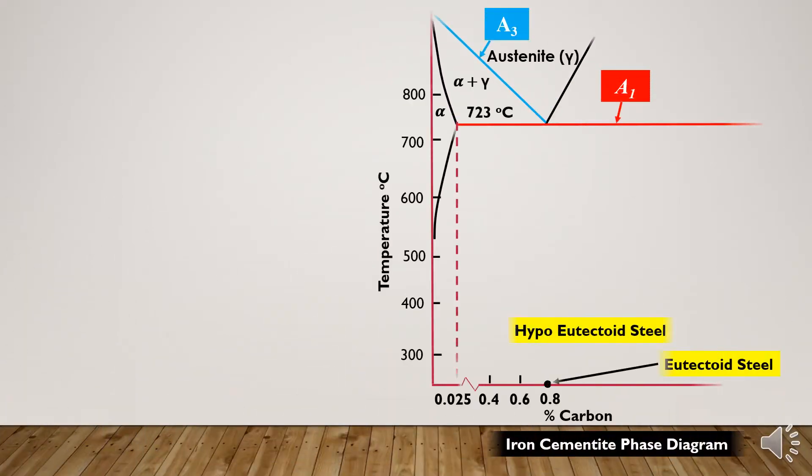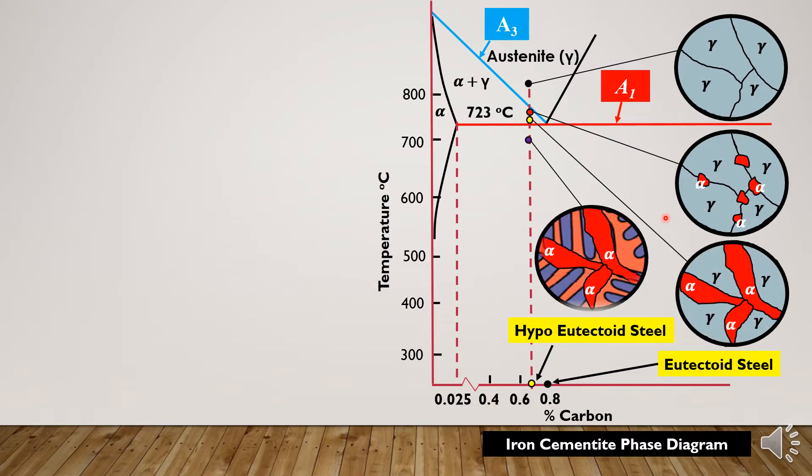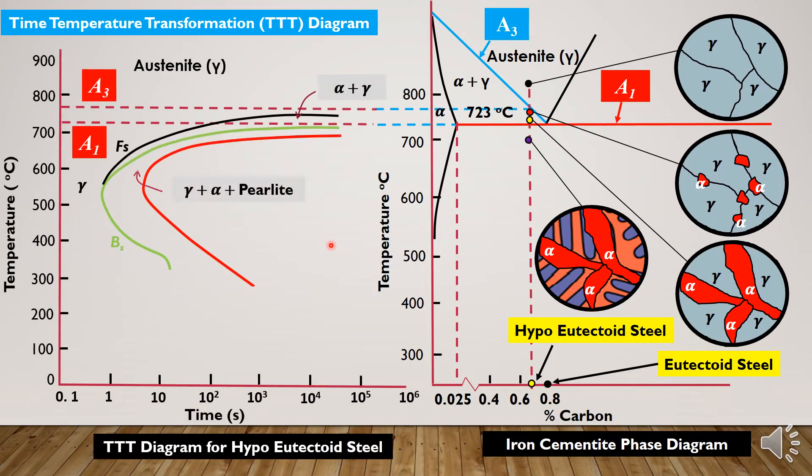So far we have seen that when we cool down alloys by equilibrium cooling, we get microstructures as predicted by their equilibrium phase diagram. But when we cool down alloys isothermally at different temperatures, we get microstructures as predicted by their time-temperature-transformation diagram.